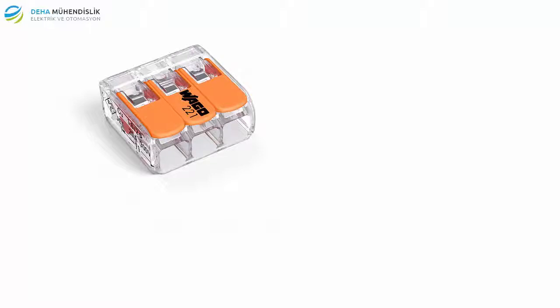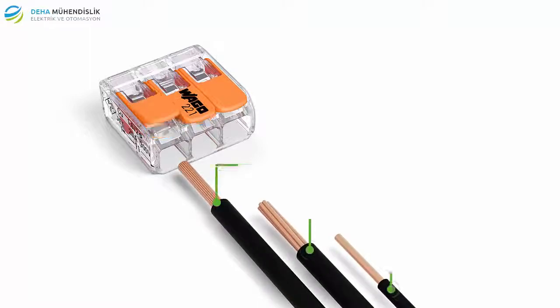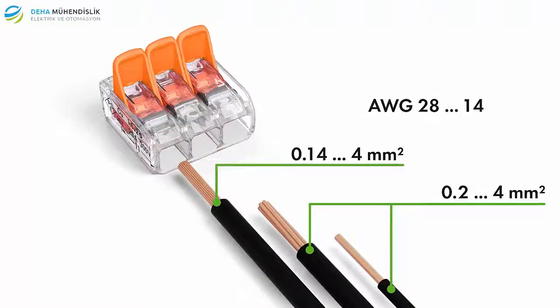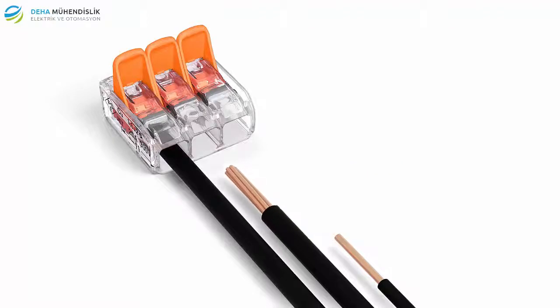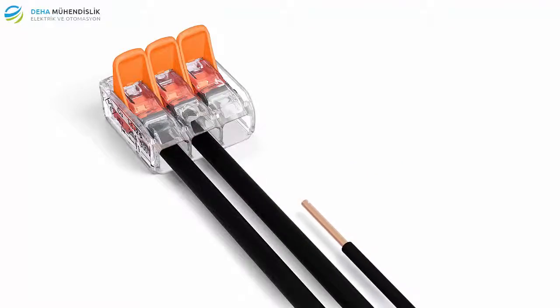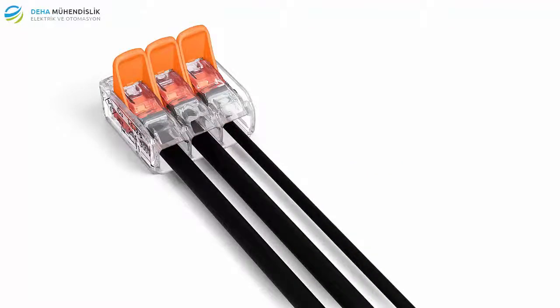The compact splicing connectors for all conductor types feature a large connection range, 0.14 to 4 square millimeters fine-stranded and 0.2 to 4 square millimeters solid and stranded 28 to 14 AWG. This flexibility permits a wide range of applications, especially when conductors of different types and different sizes are used together.